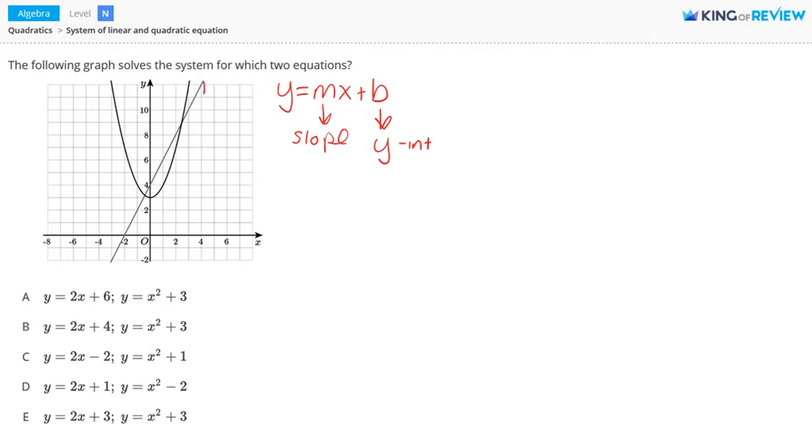So we have our line here. Let's take a look at the slope and the y-intercept. The y-intercept is where it crosses the y-axis. This line crosses the y-axis at 4, so we know that b equals 4.